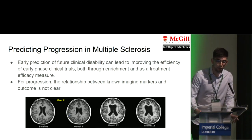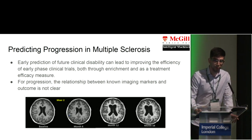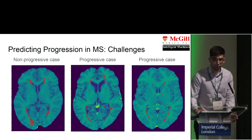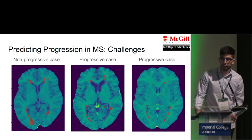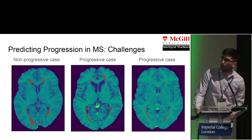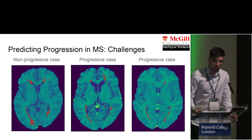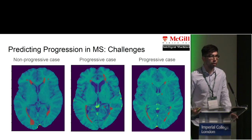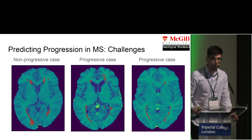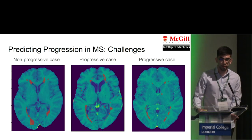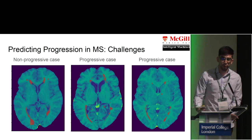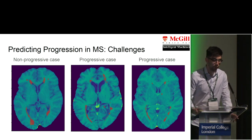However, it's a hard problem because the relationship between known imaging markers and outcome is not clear, and this can be seen by looking at these images. If you compare the image in the center where the lesions are highlighted in red, that patient ends up progressing, whereas on the left, where they have similar lesion location but heavier lesion load, the patient does not progress. And on the right, where you have neither big lesions nor atrophy, the patient has a more aggressive form of the disease.